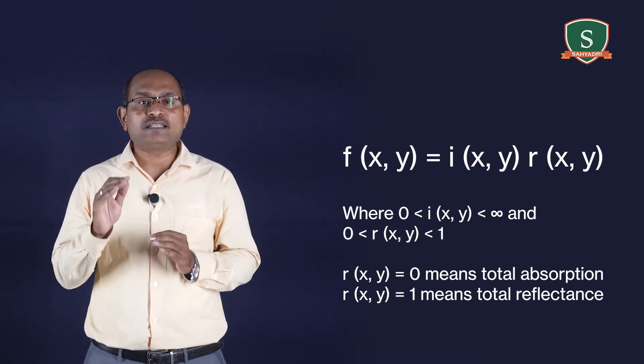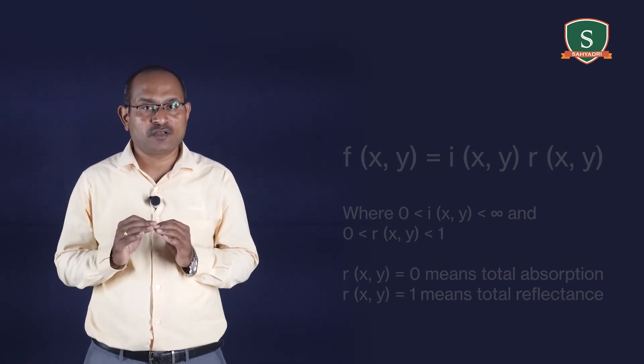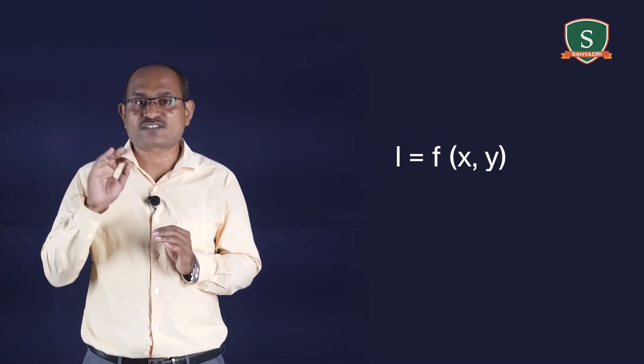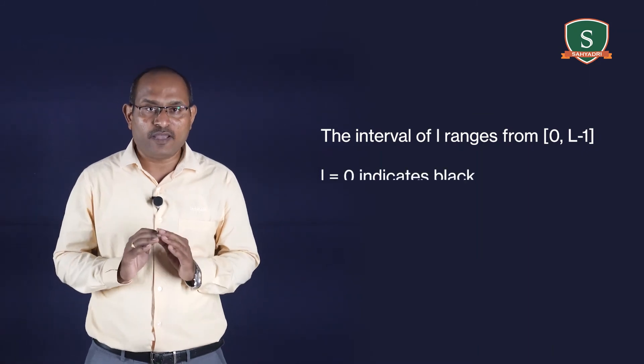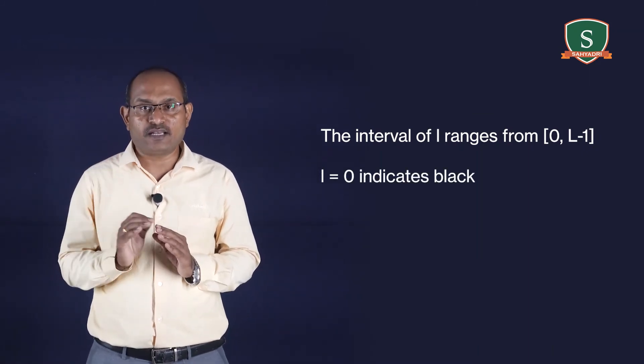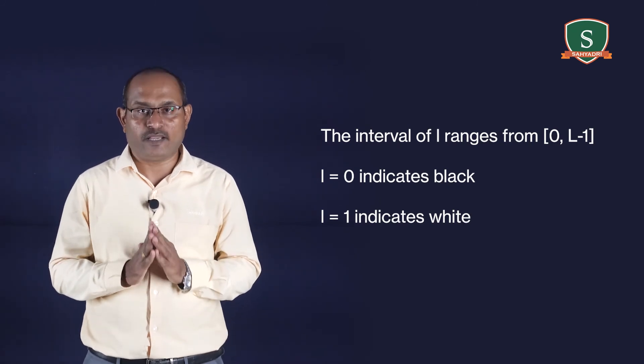We call the intensity of a monochrome image at any coordinate (x, y) the gray level i of the image at that point, that is i = f(x, y). The interval of i ranges from 0 to N-1, where i = 0 indicates black and i = 1 indicates white, and all intermediate values are shades of gray varying from black to white.